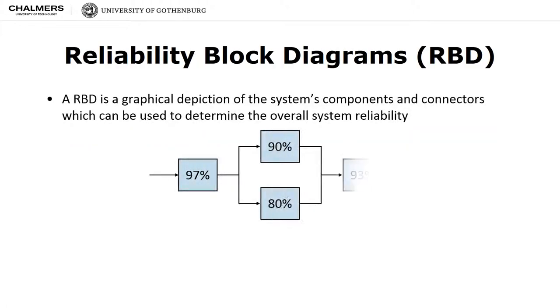Reliability Block Diagrams. A Reliability Block Diagram, abbreviated RBD, is a graphical depiction of the system's components and connectors. And it can be used to determine the overall system's reliability given the reliability of the components.